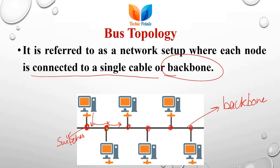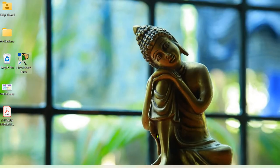In bus topology, one device will act as the starting node and the device connected last will act as the ending node. We will be using switches as the starting and ending nodes as well as repeaters with the Cisco Packet Tracer tool. So let's start the practical demonstration.